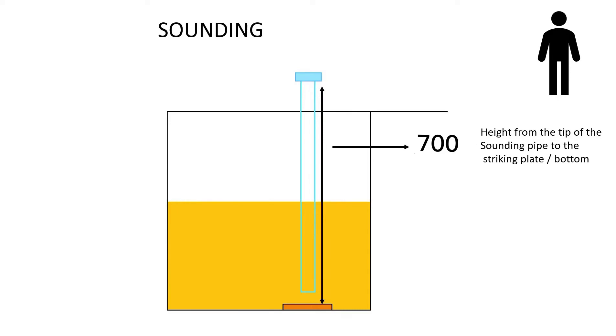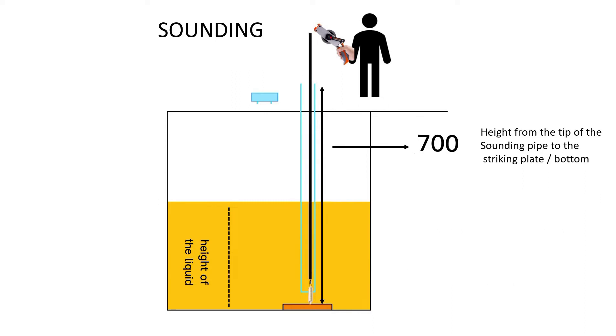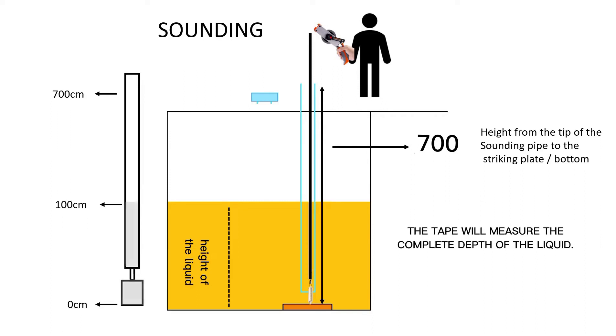Let's proceed, here we have a tank filled with diesel oil. The height from the tip of sounding pipe to the striking plate is 700 cm. A sounding method is used. First, remove the sounding cap. Insert the sounding tape to the sounding pipe and roll down until it touches the bottom of the tank or at around 700 cm of the tape. The tape will measure the complete depth of the liquid.